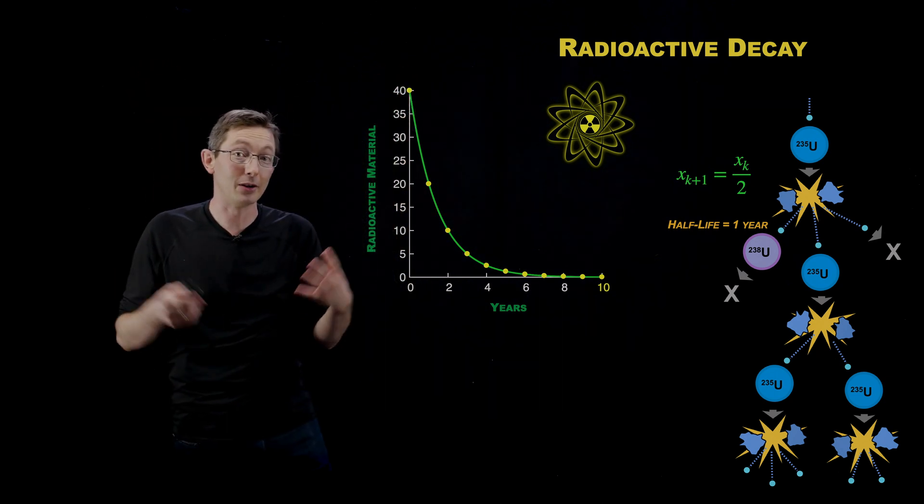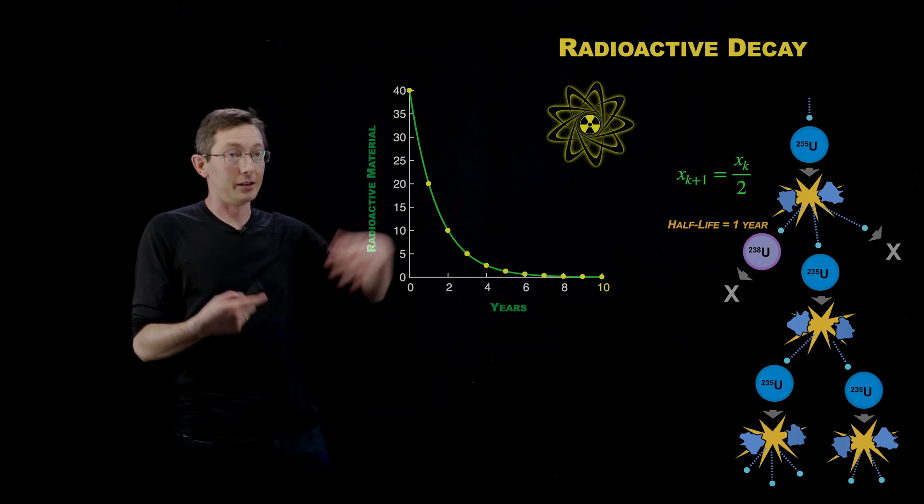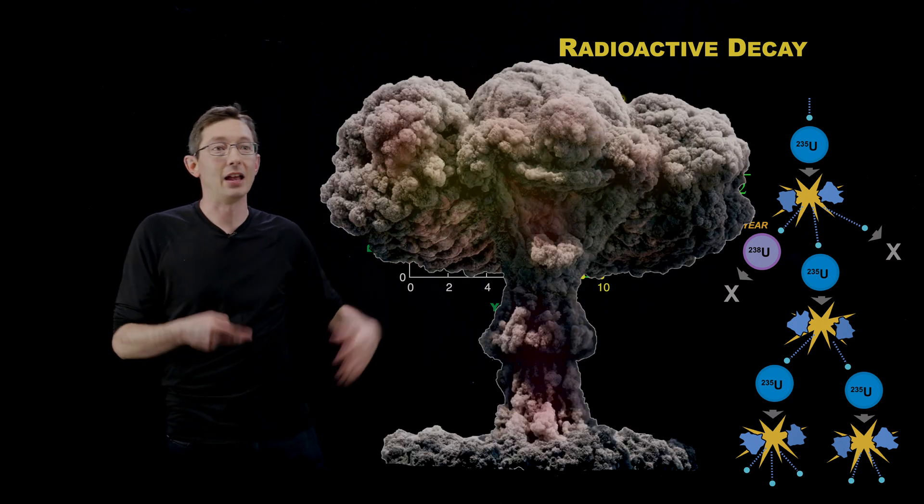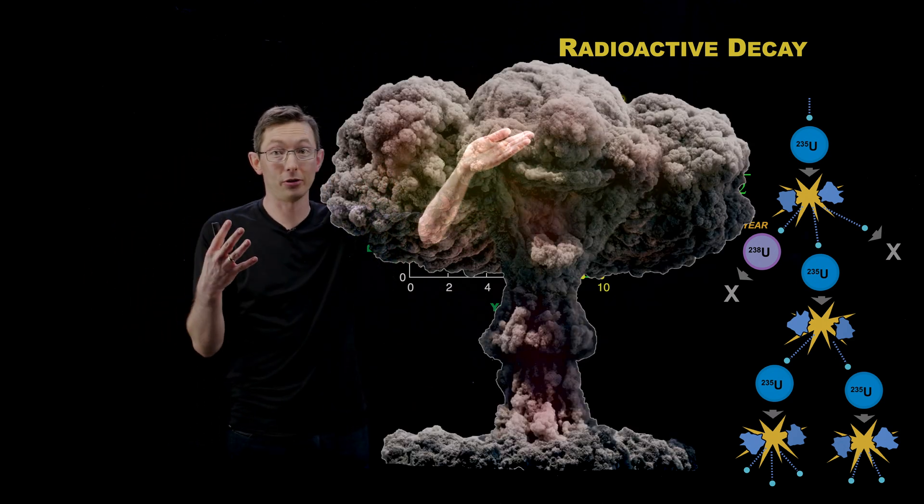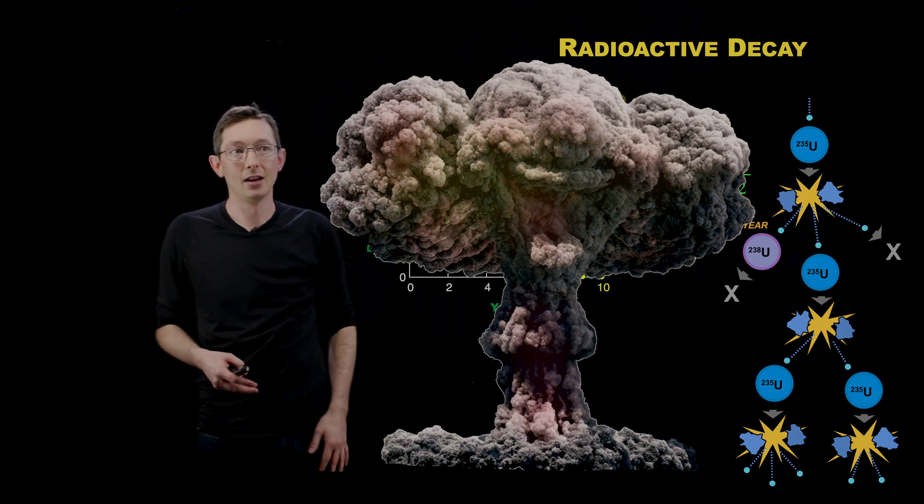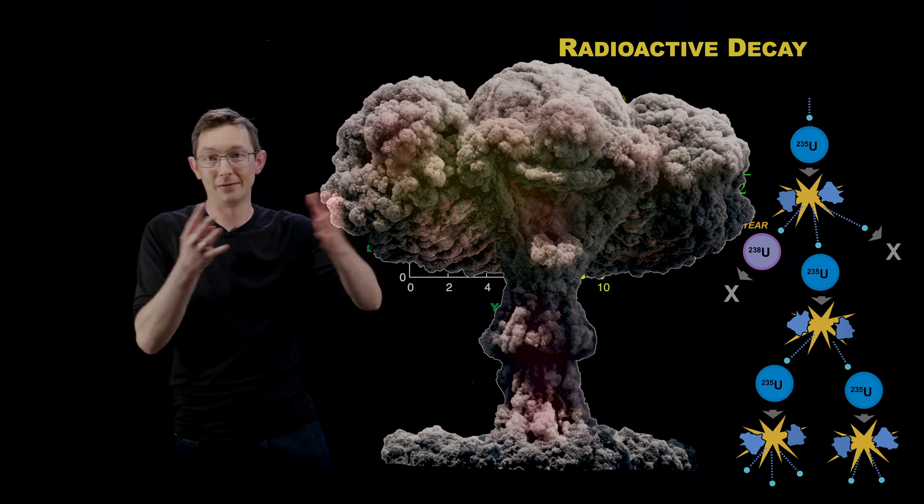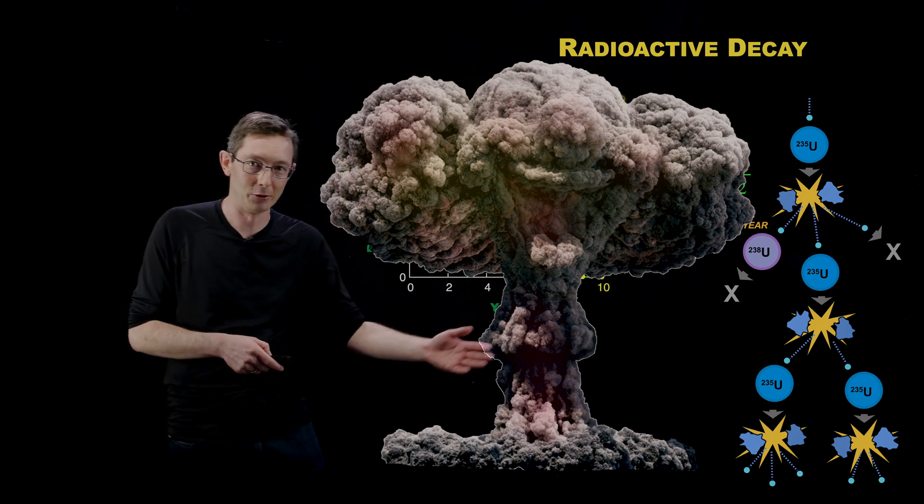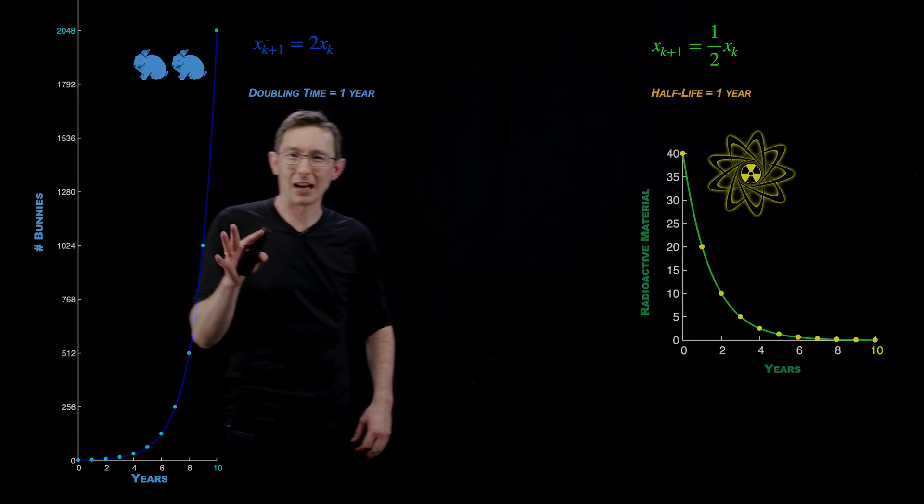And very quickly if you have a critical mass, you end up achieving fission and you get, again, exponential growth until all of that material has decayed or fissioned in this explosion. So I think that's a fun example.